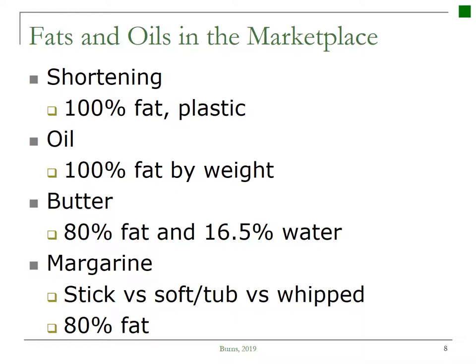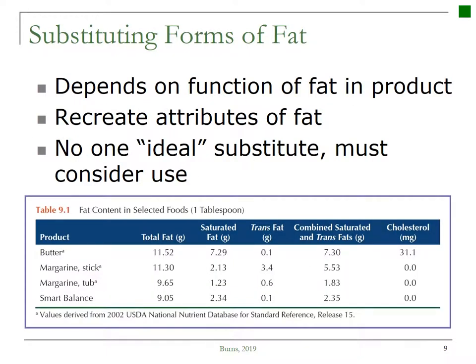Margarine is still 80% fat, with some of the softer tub margarines having a higher water content, therefore making them not as appropriate for baking. When we think about substituting different types of fat — maybe because we don't have a certain kind at home, or because we are looking to have a diet lower in saturated fat or trans fat — we're looking for a more heart-healthy fat. The fat we want to substitute is going to depend on the function of that fat in the product.